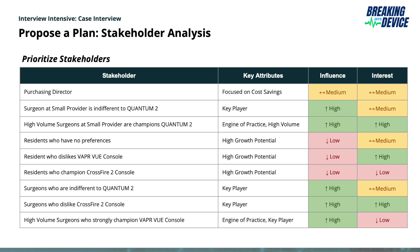For example, the purchasing director was focused on consolidating suppliers, so a key attribute is focused on cost savings. The surgeon at the small provider who is indifferent is a key player — someone you really want to target. Further down the list, residents are tagged as high growth potential. The next things to map out are influence and interest. Influence can be easily identified: a surgeon will almost always have more influence than the purchasing director, while residents new to the organization will have the lowest influence. Map these out as high, medium, or low.